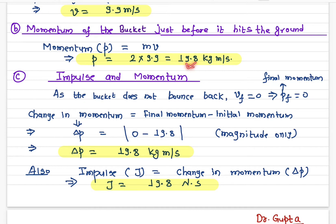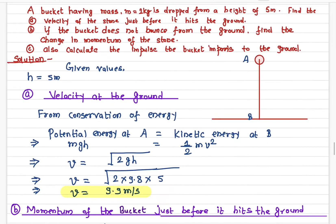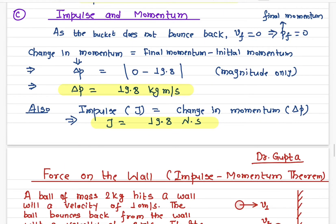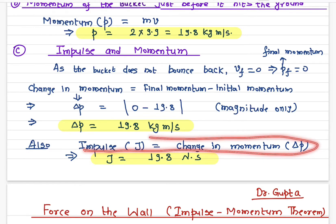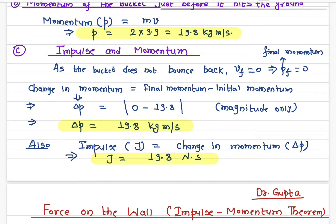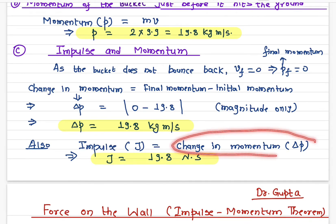Now we apply the impulse-momentum theorem. The impulse-momentum theorem states that impulse is exactly equal to the change in momentum. We have already calculated the change in momentum to be 19.8 kg·m/s, so the impulse is also 19.8 kg·m/s.